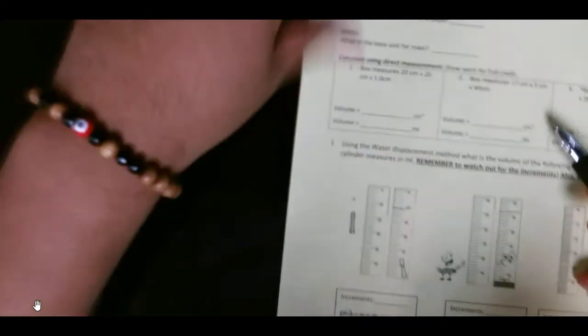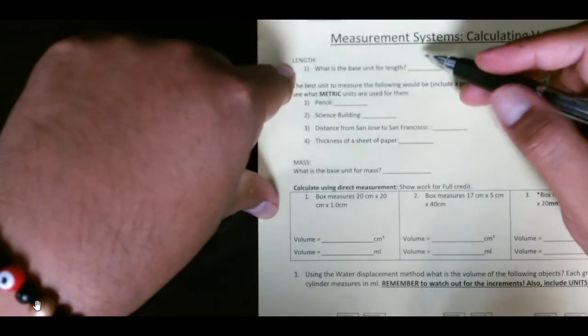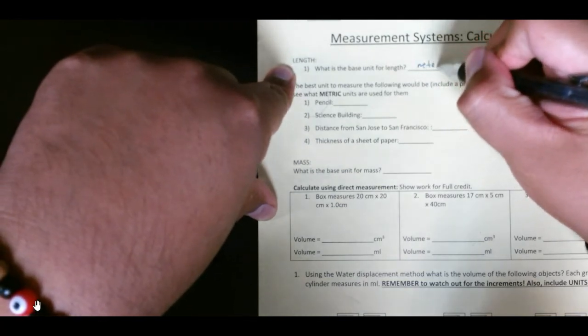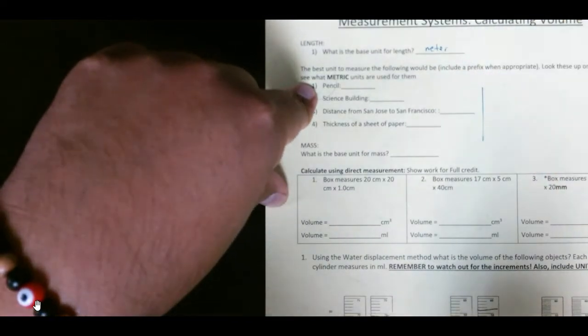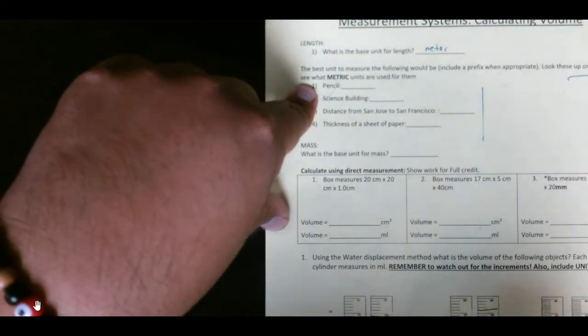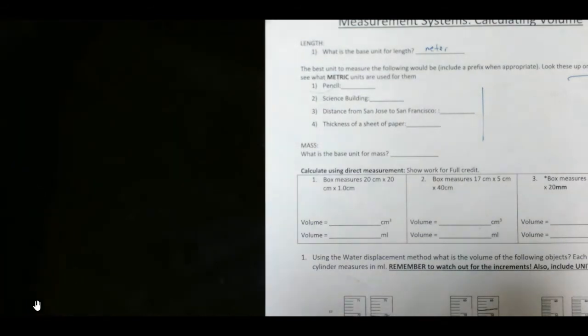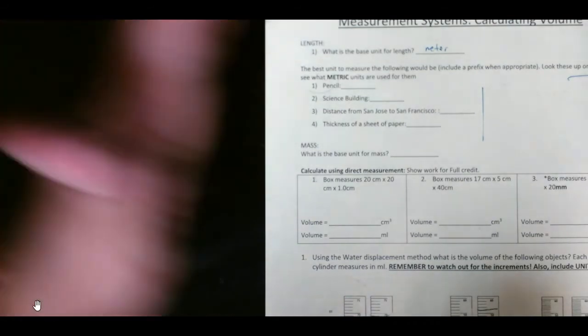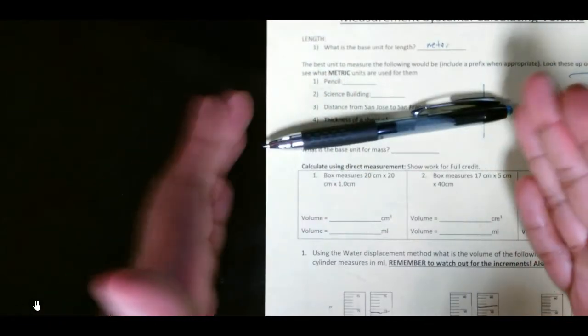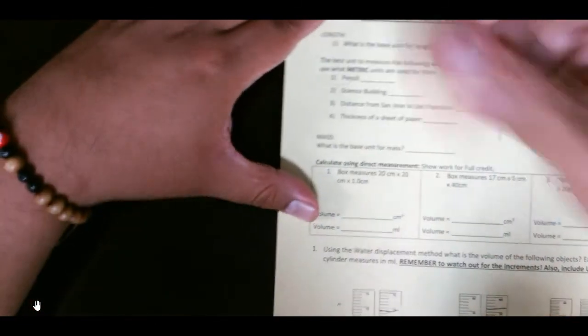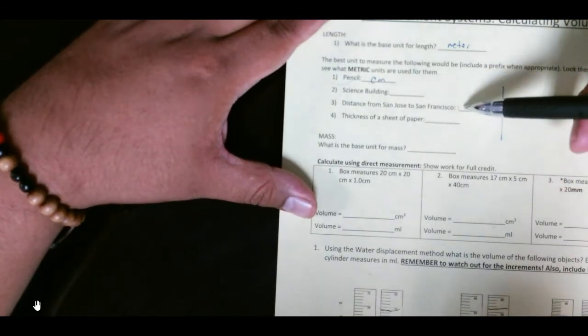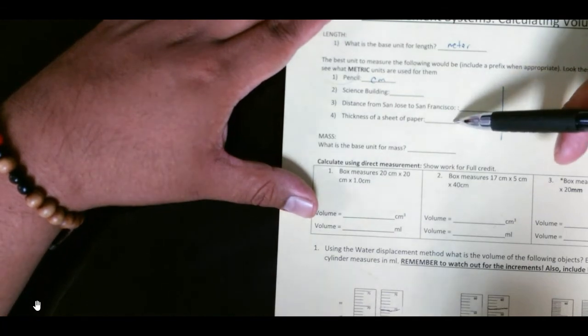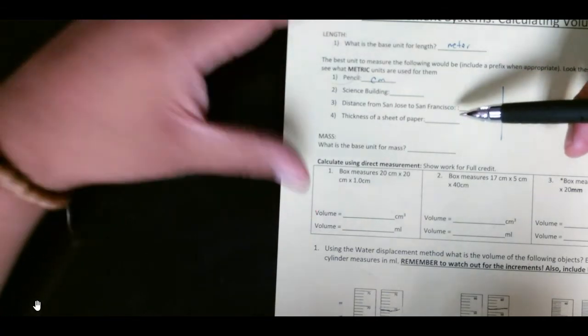Alright. Other side. Unit for length. Easy. Base unit. Meter. Every time we use length, centimeter, millimeter, blah, blah, blah. This, you can research. Look it up online. Okay. So, if we're going to measure pencil, what are we measuring it? Centimeters, kilometers, meters. Like, meter is, like, gigantic. Centimeters is probably a good measure of a pencil. But what about the science building? You don't want to measure the science building in centimeters. What about the distance to San Francisco? You don't want that in centimeters. Could you? Sure. But you don't want to. How thick a paper is.